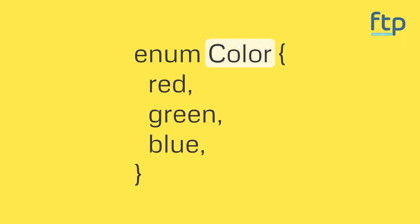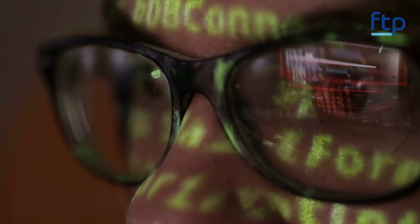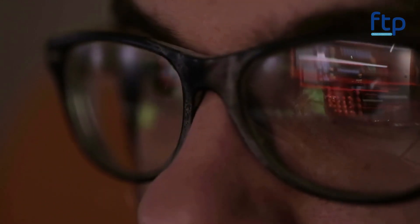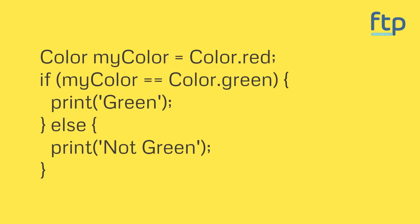Here is an example of how to define an enum in Flutter. In this example, color is the name of the enum, and red, green, and blue are the enumerators. Once you have defined an enum, you can use it to create variables and perform operations on them. This will print 'not green' to the console, because the value of the myColor variable is color.red.